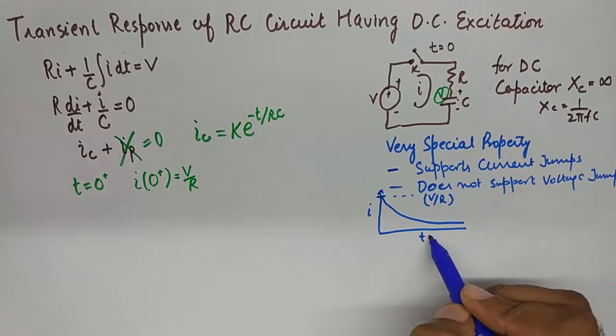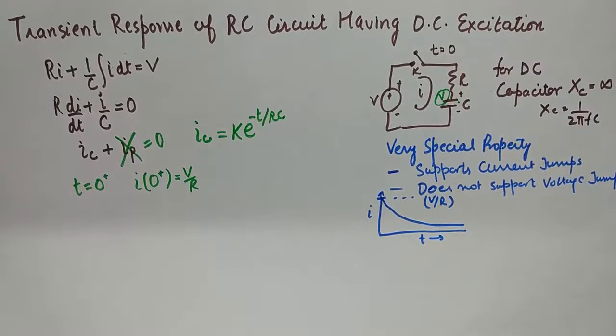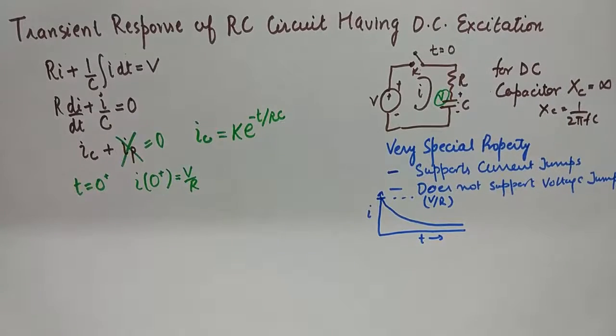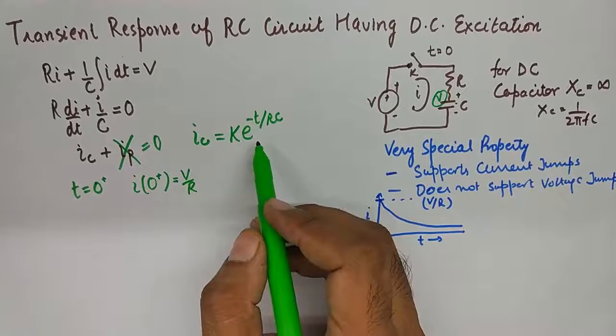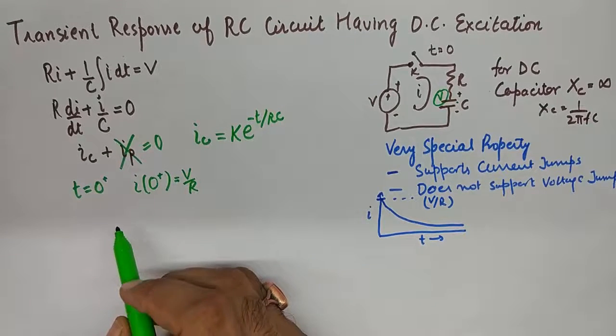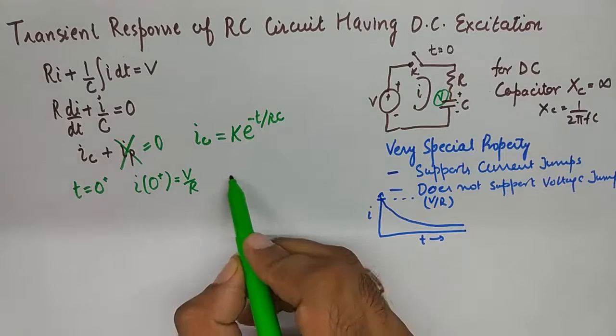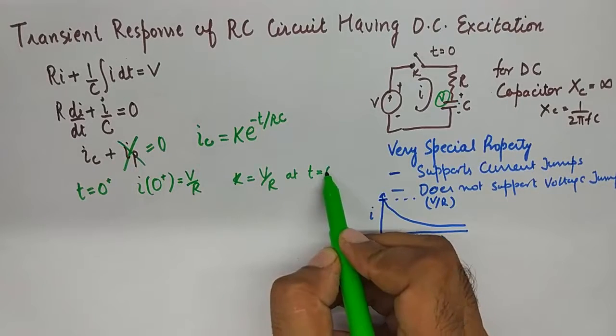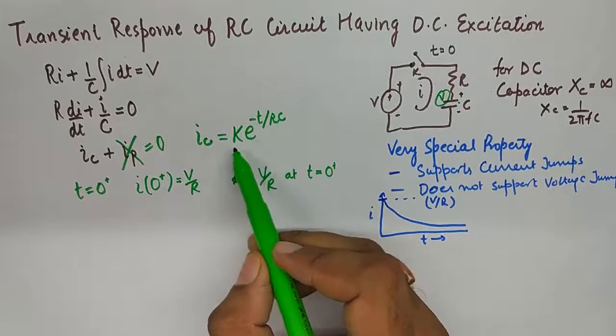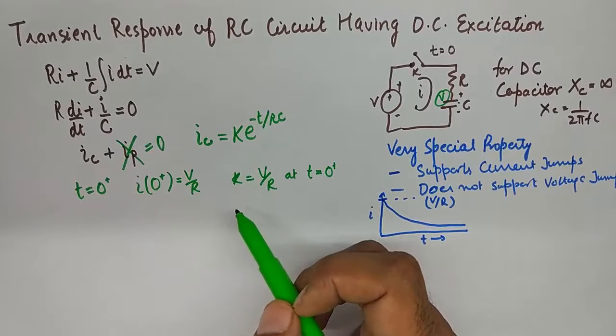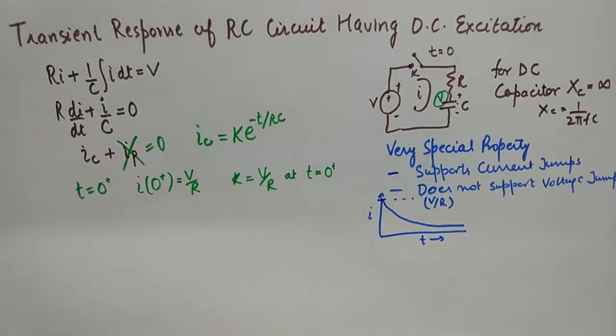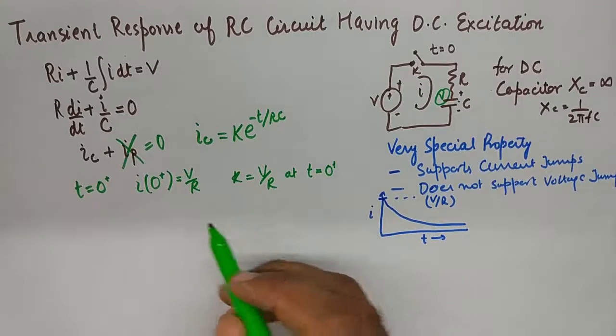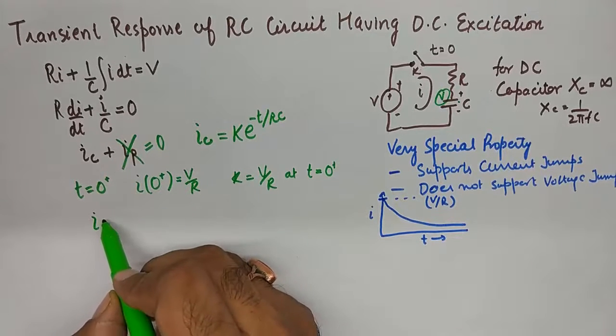And it eventually starts to decrease as capacitor comes into play its part. But by substituting this value here we can simply say that k becomes equivalent to V/R at time t equals 0. So by putting t equals 0 here we get V/R.